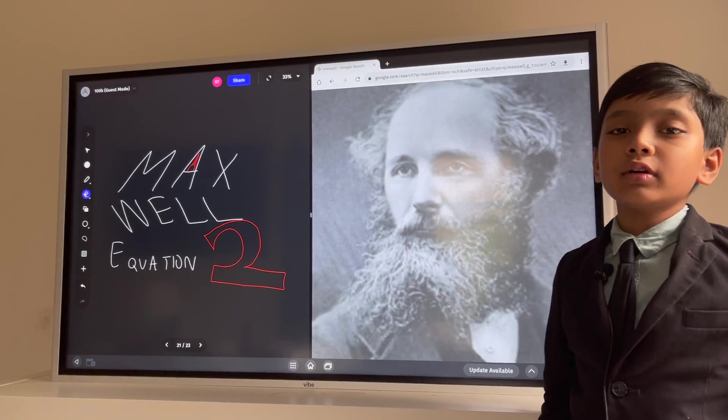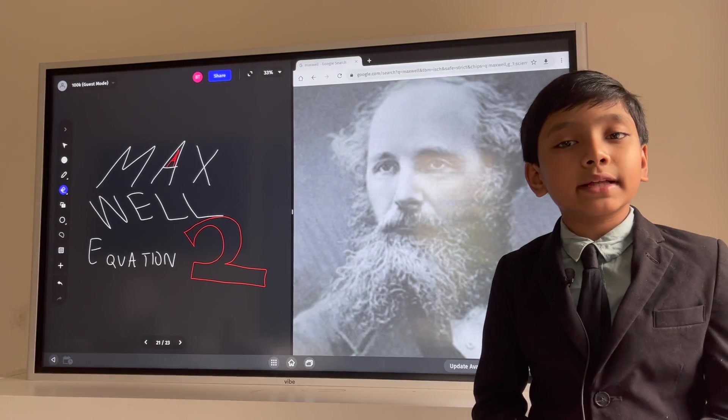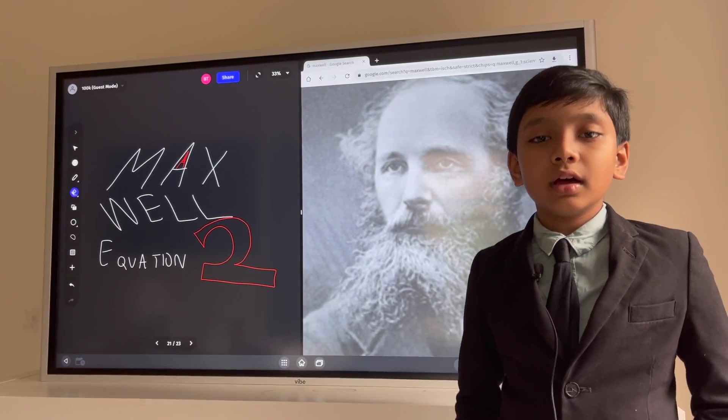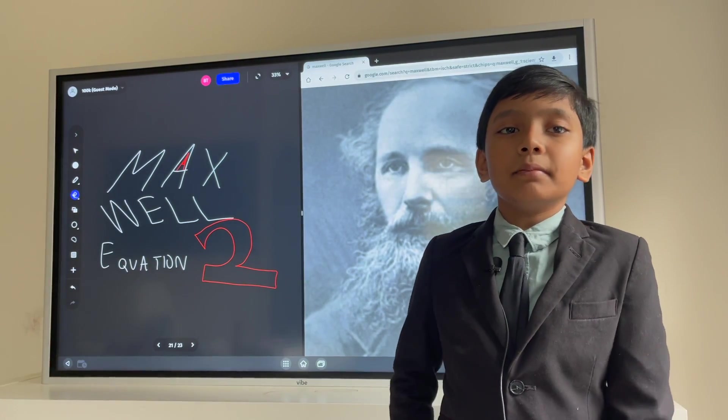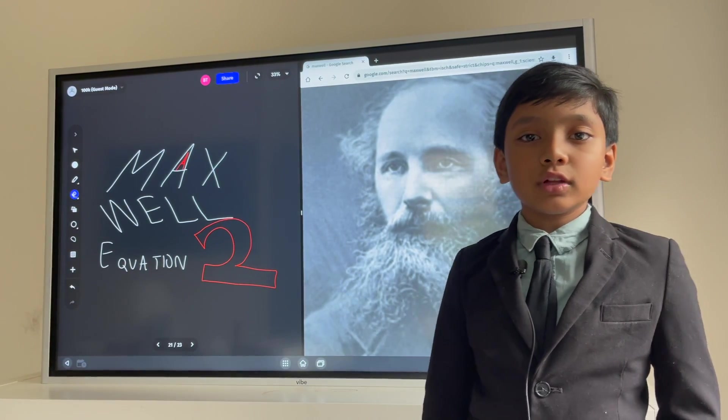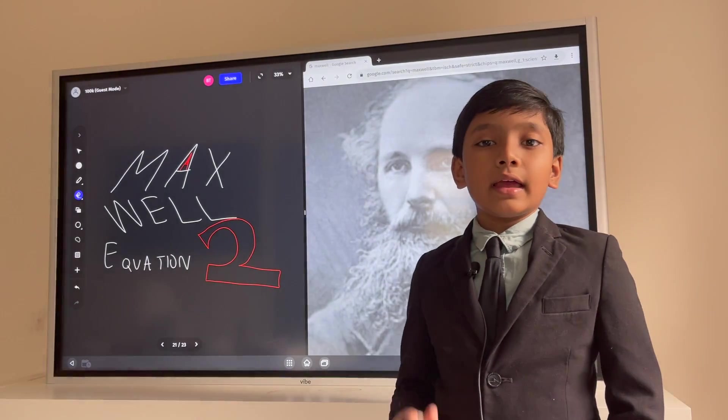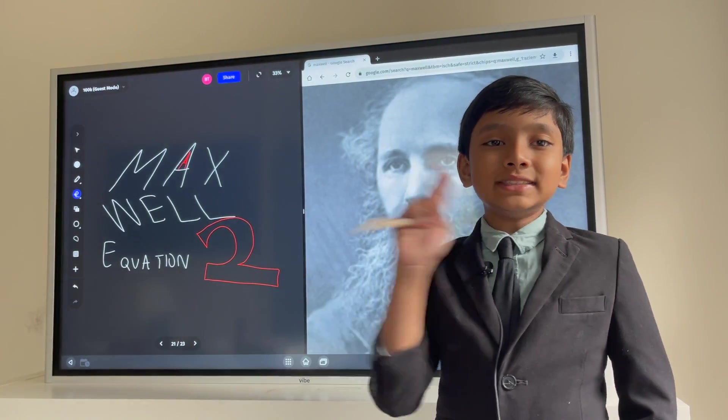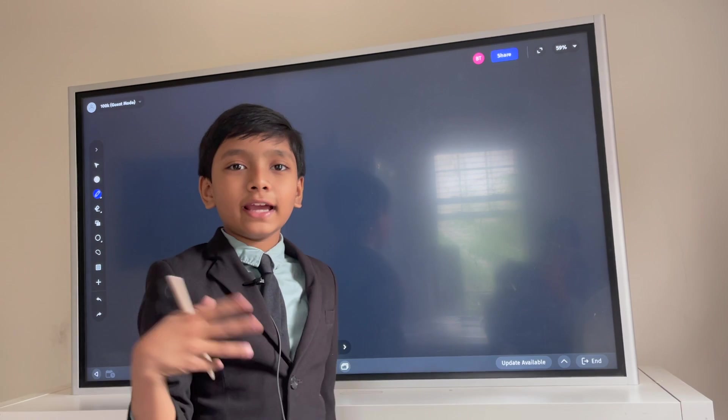James Clerk Maxwell. He unified electricity and magnetism to one great subject, electromagnetism. And using four different equations, he masterfully stitched together two almost impossible-to-unify subjects. And we are exploring the second equation that he made. Go watch the first equation talking about the electric field.